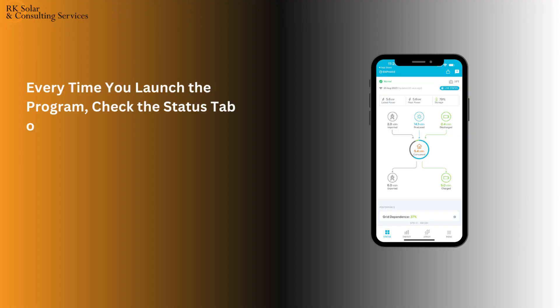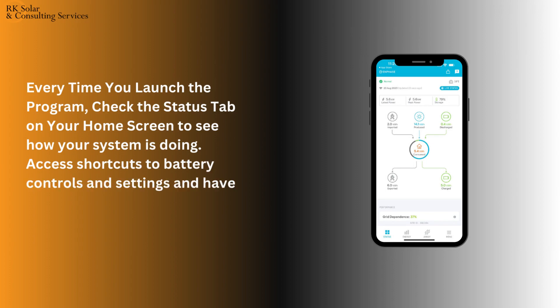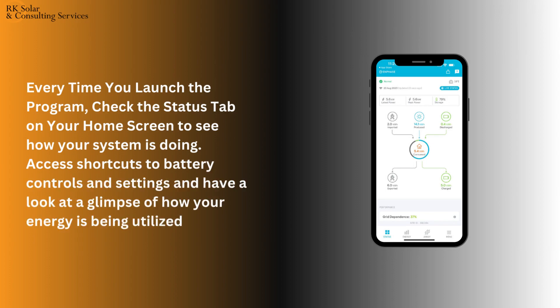Every time you launch the program, check the status tab on your home screen to see how your system is doing. Access shortcuts to battery controls and settings and have a look at a glimpse of how your energy is being utilized.